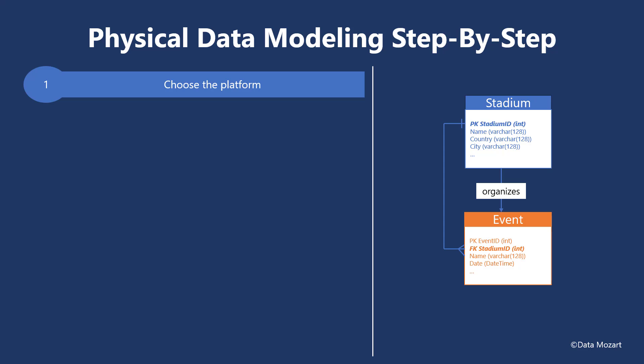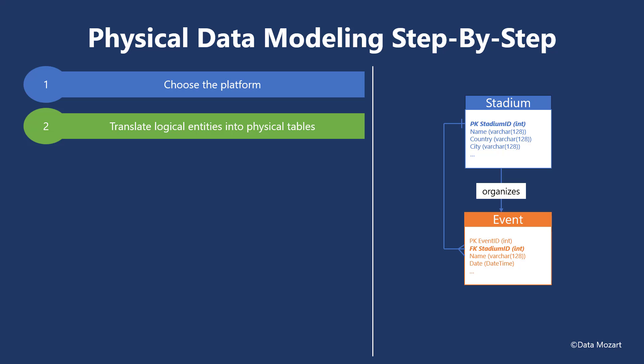Next, translate logical entities into physical tables. The logical entity is just that — a logical entity — and it exists on a more abstract level. Since a real database doesn't support that level of abstraction, we need to translate that entity into a physical unit. This means we need to provide information to the underlying platform on how the data should be stored — in simple words, define the data type of each entity attribute, be it a whole number, decimal number, or plain text.